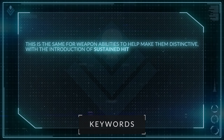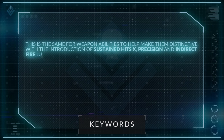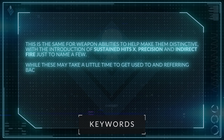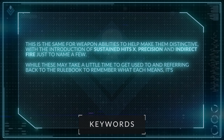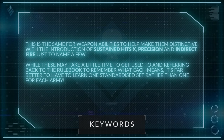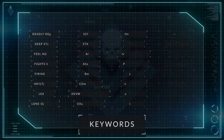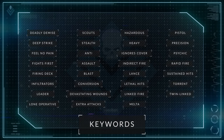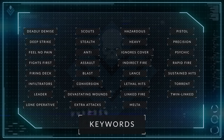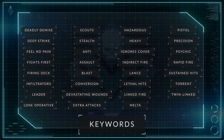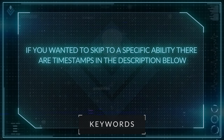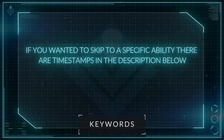This is a nice change from previous editions, where this ability was named differently for pretty much every army, even though the vast majority of the playerbase ended up calling it Deep Strike anyway for easier understanding. This is the same for weapon abilities, to help make them more distinctive, with the introduction of sustained hits, precision and indirect fire, just to name a few. While these may take a little time to get used to, and referring back to the rulebook to remember what each of them means, it's far better to have to learn one standardized set rather than one for each army. In this video, I'll be going over each of the universal special rules, core and weapon abilities, so you'll have an understanding of what each of these mean going into your next games. There are timestamps in the description below if you wanted to skip to a specific ability.